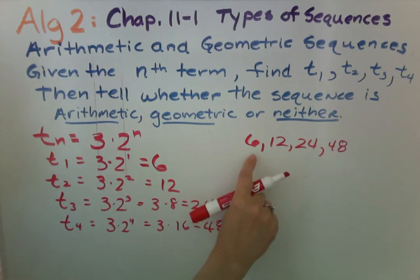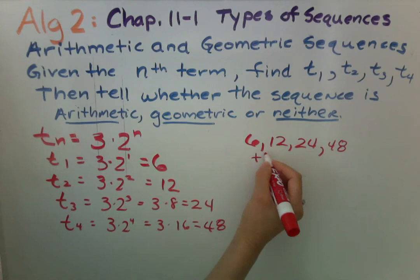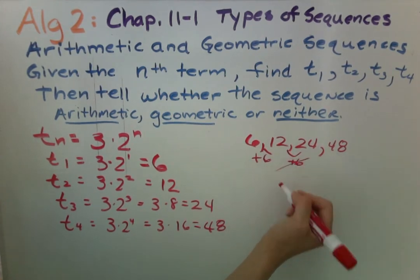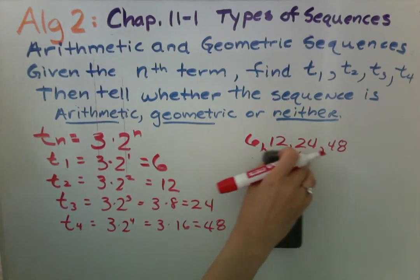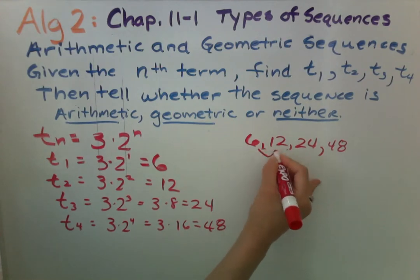If we add 6 to 6 we get 12, but adding 6 to 12 does not give us 24. So adding 6 does not work. We try multiplying - we multiply 6 times 2.